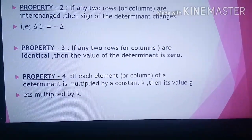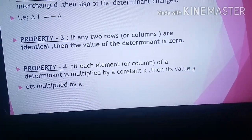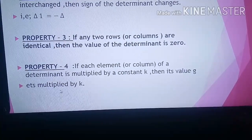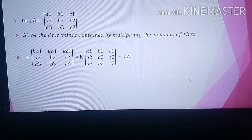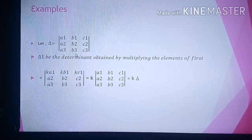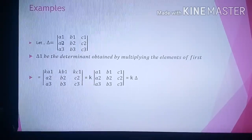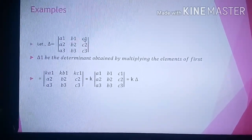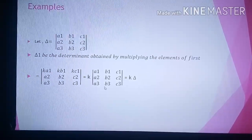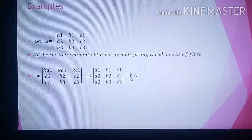Property 4: if each element of a row of a determinant is multiplied by a constant k, then its value is multiplied by k. Let determinant delta have rows a1, b1, c1; a2, b2, c2; a3, b3, c3. Let delta 1 be the determinant obtained by multiplying the elements of the first row by k: ka1, kb1, kc1; a2, b2, c2; a3, b3, c3. We can factor out k from the first row to write delta 1 equals k into delta.